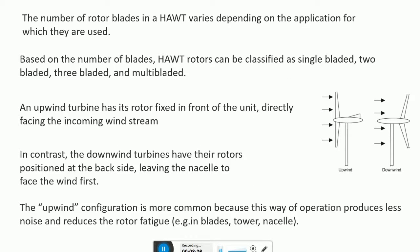The number of rotor blades in a horizontal axis wind turbine varies depending on the application. Based on number of blades, rotors can be classified as single-bladed, two-bladed, three-bladed, and multi-bladed. An upwind turbine has its rotor fixed in front directly facing the incoming wind stream. In contrast, downwind turbines have their rotors positioned at the back side, leaving the nacelle to face the wind first, as shown in the figure.